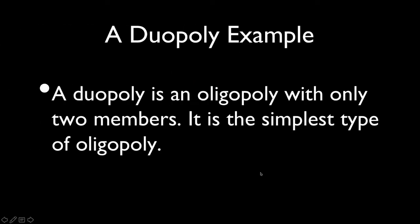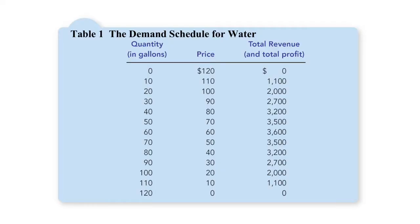A duopoly is a special type of oligopoly where you only have two members. We're going to use a hypothetical example of a duopoly — Jack and Jill, the two suppliers of a town's water. The marginal cost of production is going to be zero dollars. If one person controlled this market — a monopoly — we would expect 60 gallons of water to be produced, sold for $60, giving a total revenue of $3,600.